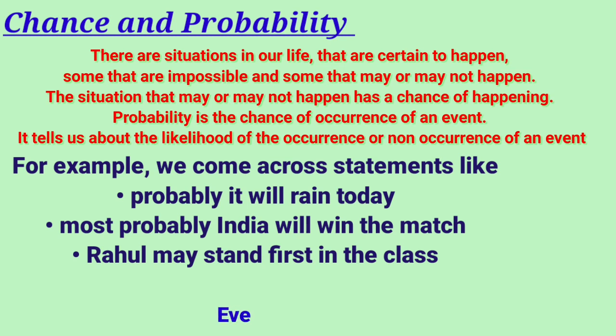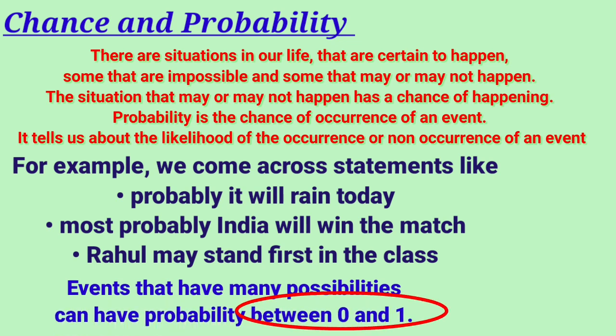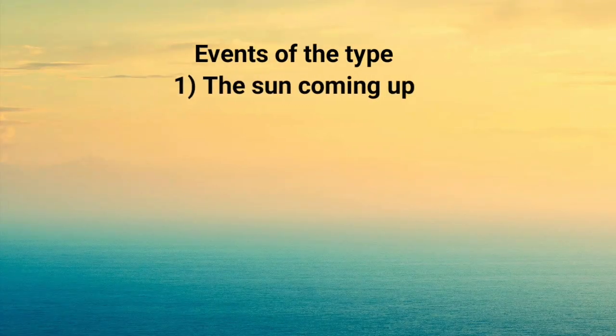Events that may have possibilities can have probability between 0 and 1. That means these are not sure events. Here there are chances that it may happen or may not. So their probability lies between 0 and 1.